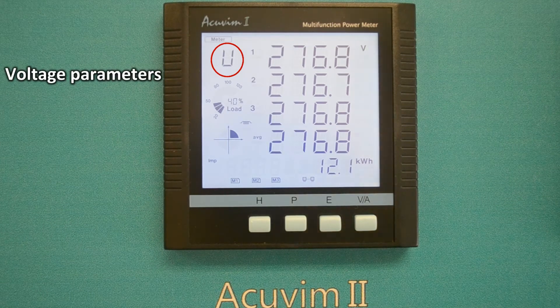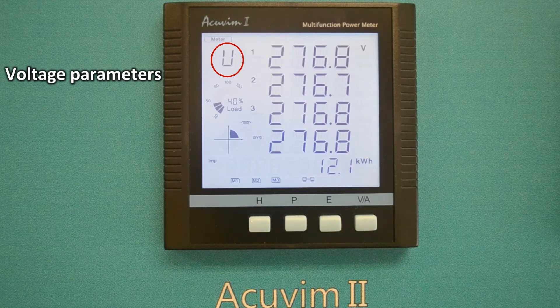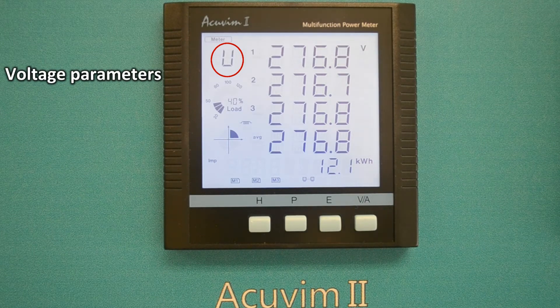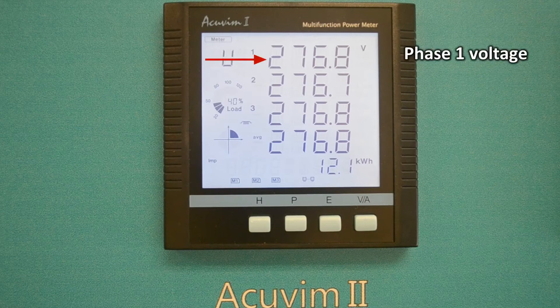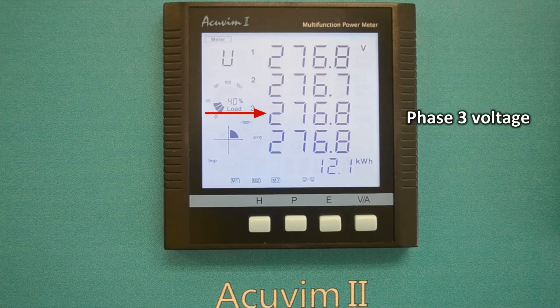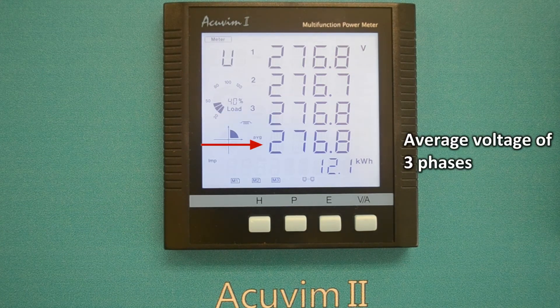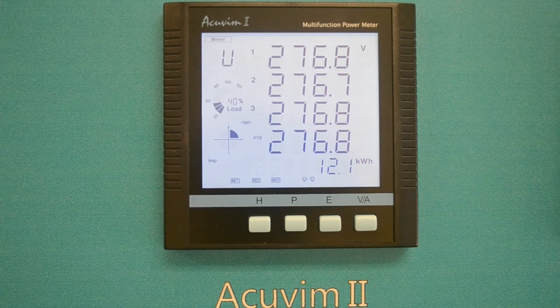The letter U in the upper left corner of the main display section means the meter is now displaying voltage parameters. Here is where phase 1, 2, and 3 voltages and the average voltage of the three phases are displayed.